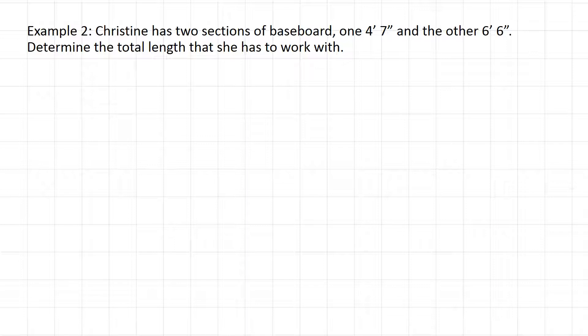with example 2 here. Christine has to add two sections of baseboards together. She has one that's 4 foot 7 and the other that's 6 foot 6, and she has to determine the total length that she has to work with. If she has to put these baseboards around a room or around a corner, she needs to know the total amount that is available to her. So we're gonna go through the same thing here. We're gonna